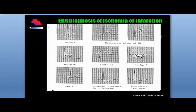A myocardial infarction that has been present for several years may be characterized by a negative deflection Q wave representing myocardial damage, with some regeneration of the R wave signified by positive deflection. The ST segment will become isoelectric and the T wave may become upright — this is an example of a chronic or old myocardial infarction.